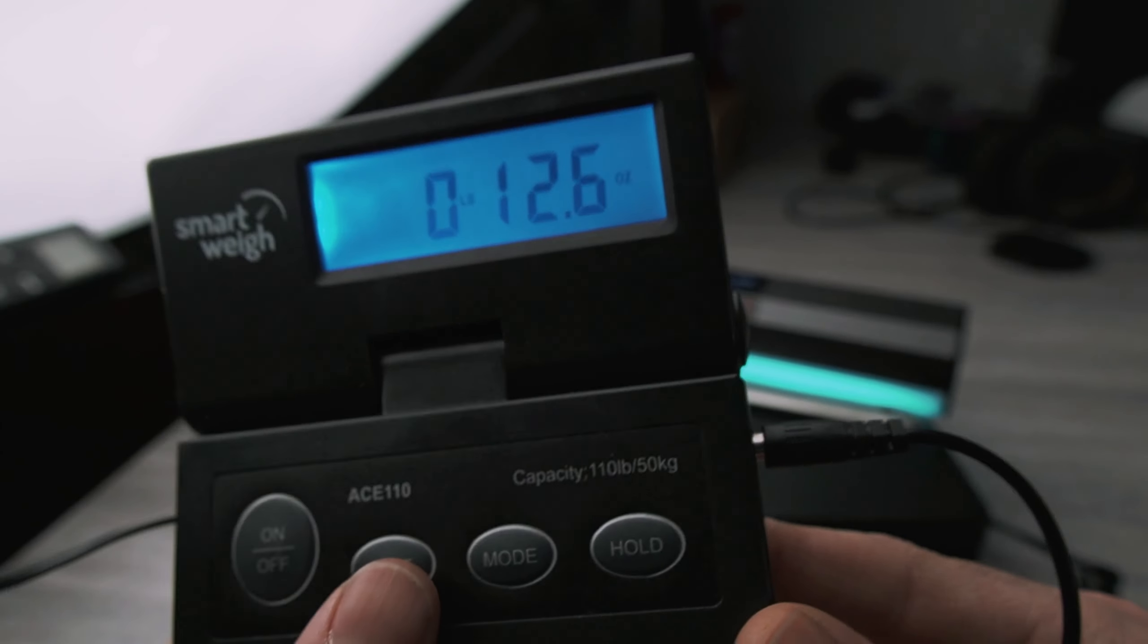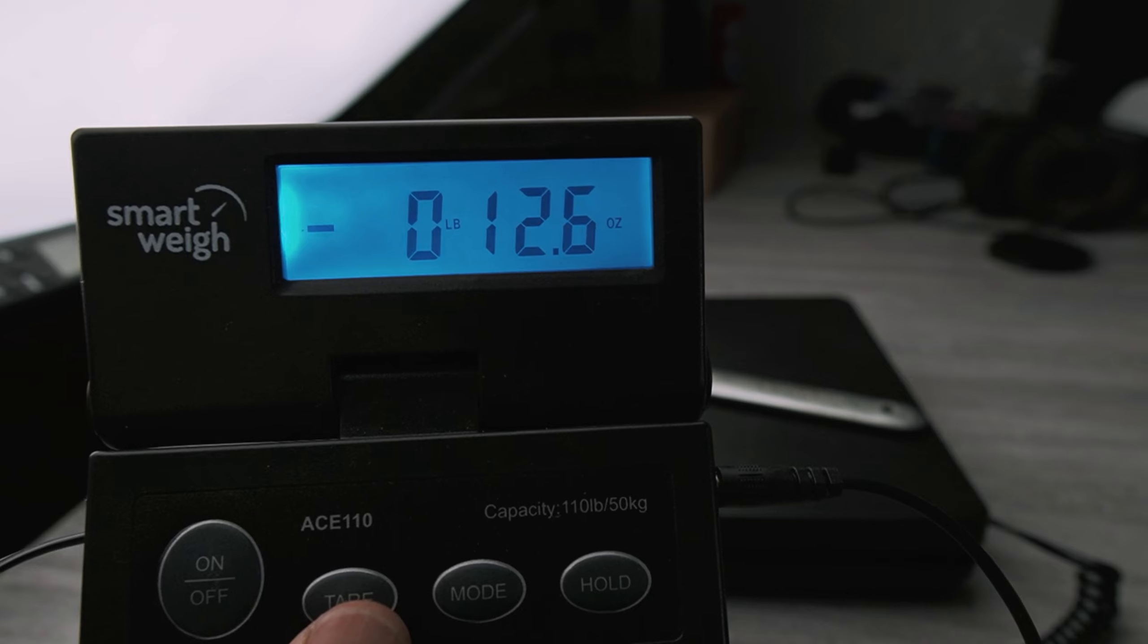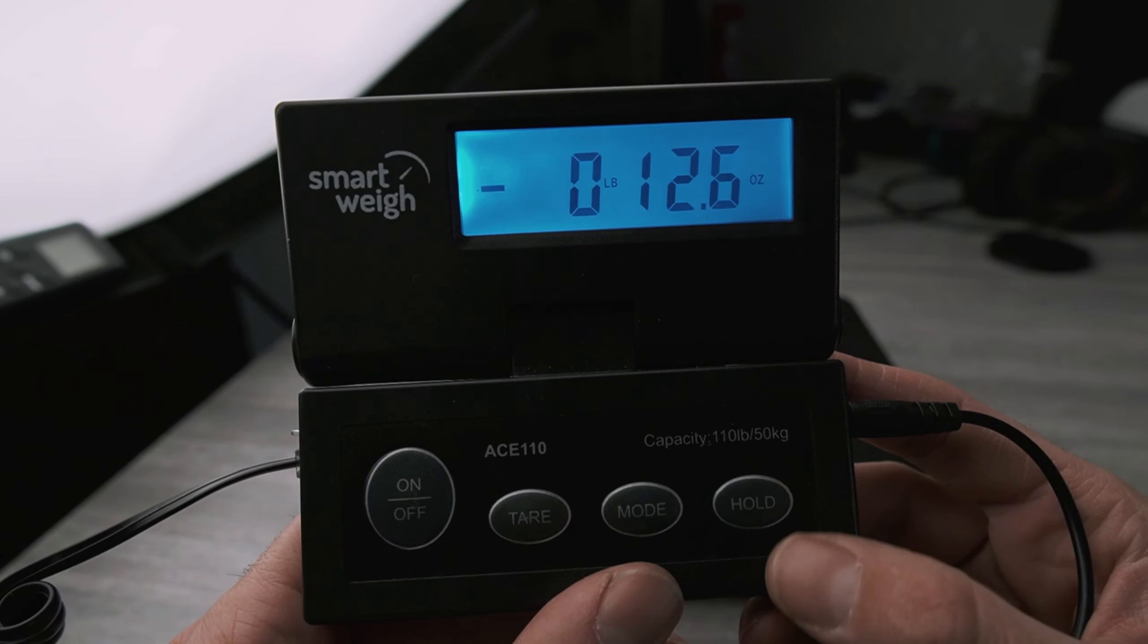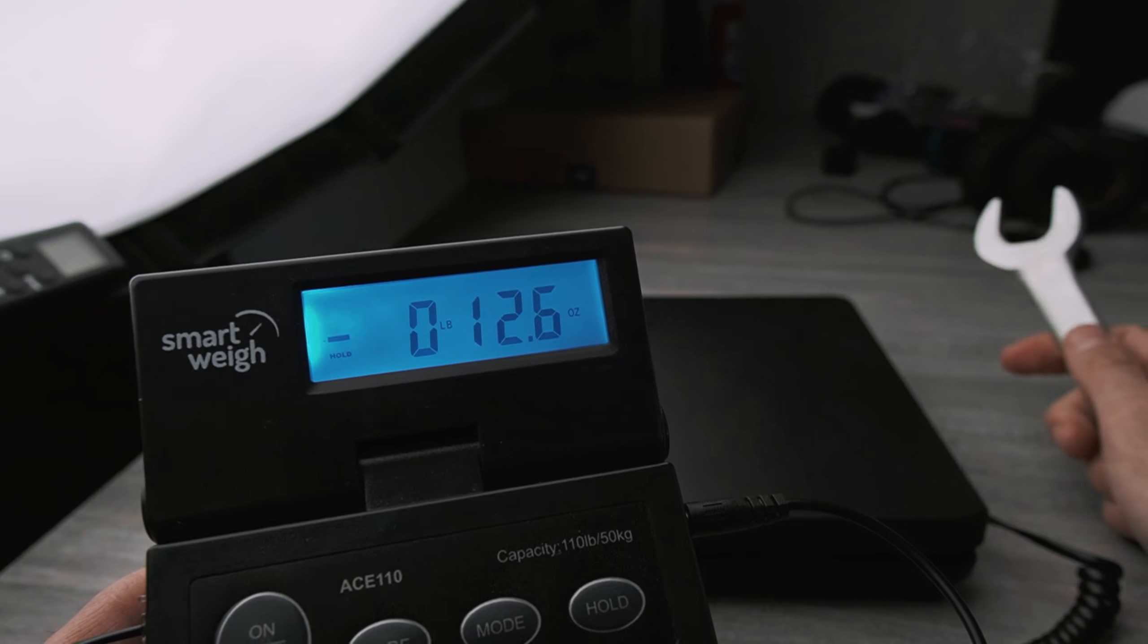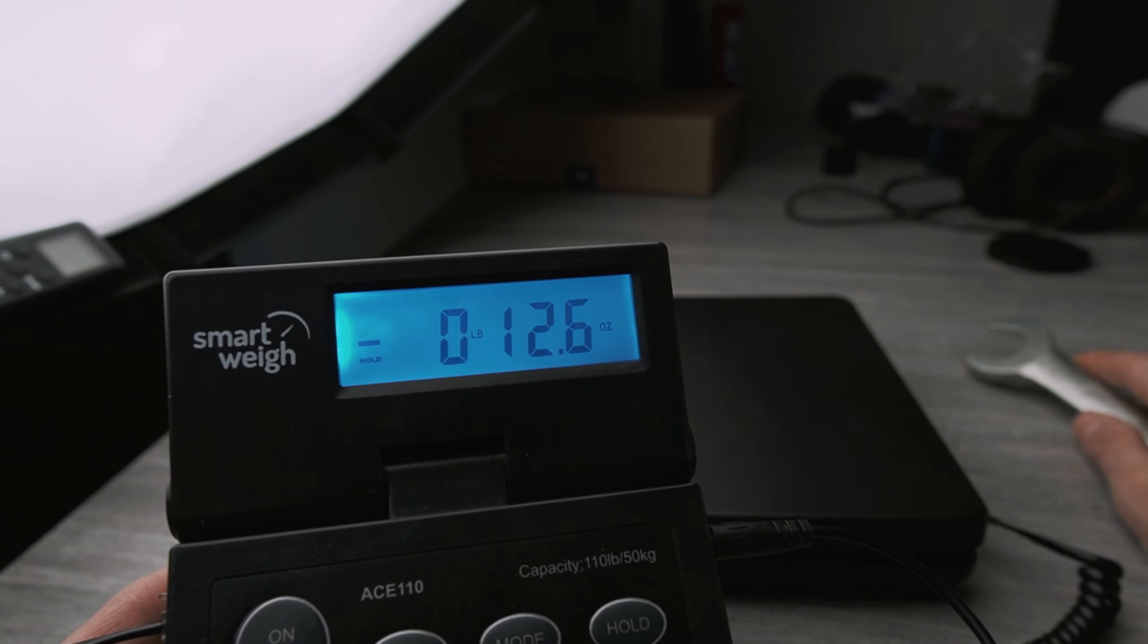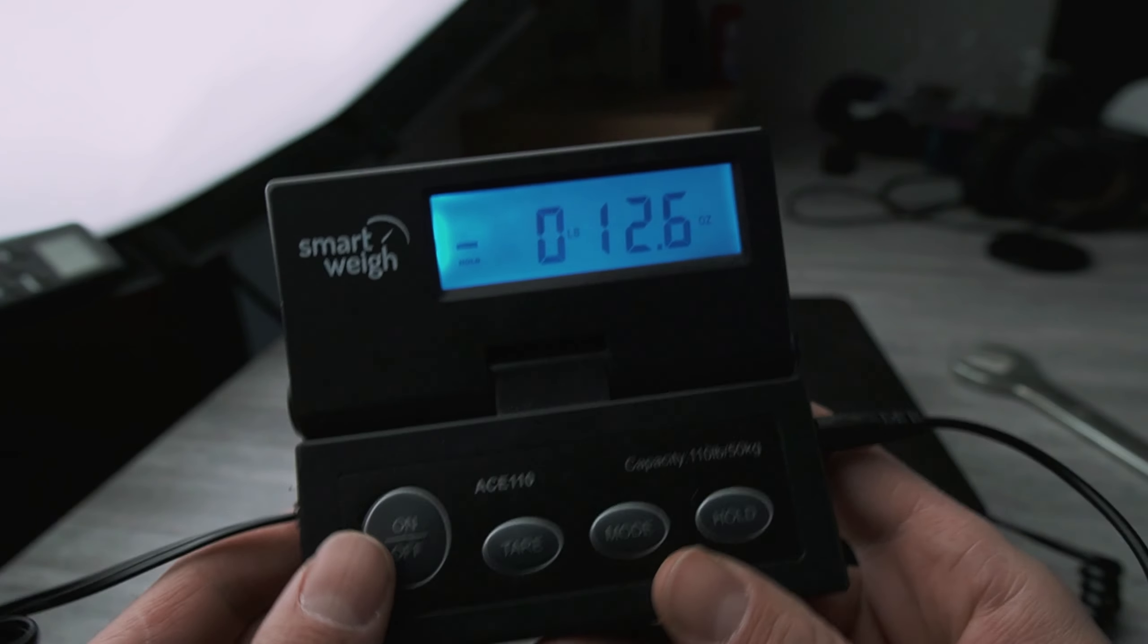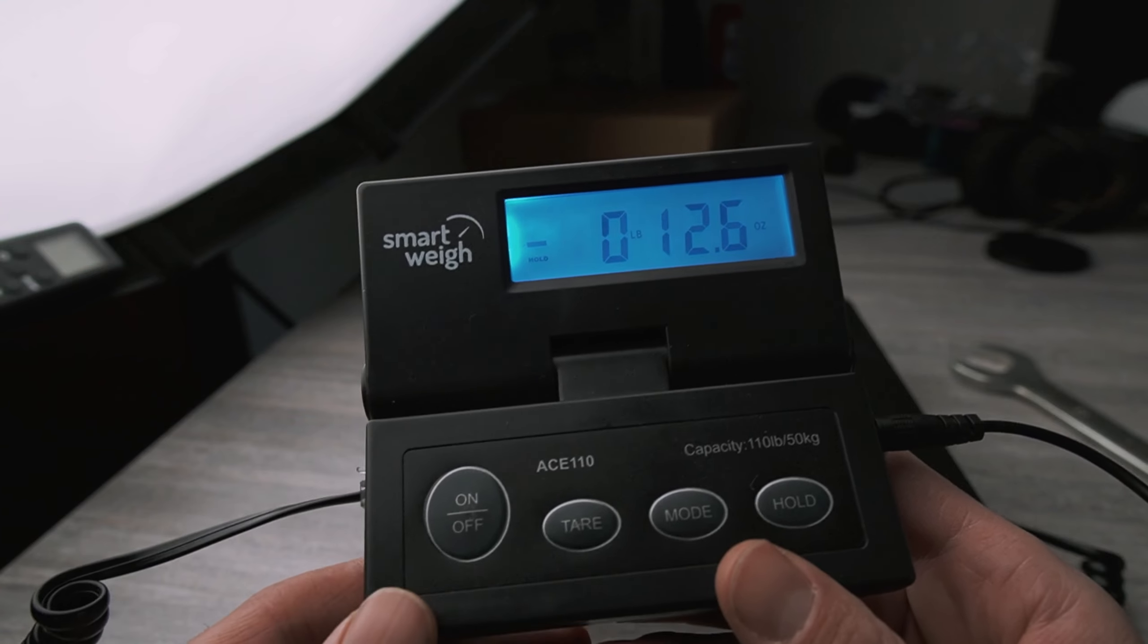You can do subtraction as well. I can tare to zero and then remove this, and it'll give me the negative so I know exactly how much this weighed. There's also a hold button so if you need to move the package around, you can save that number. The overall capacity is 110 pounds, so this is really perfect for postage and mailing big packages.